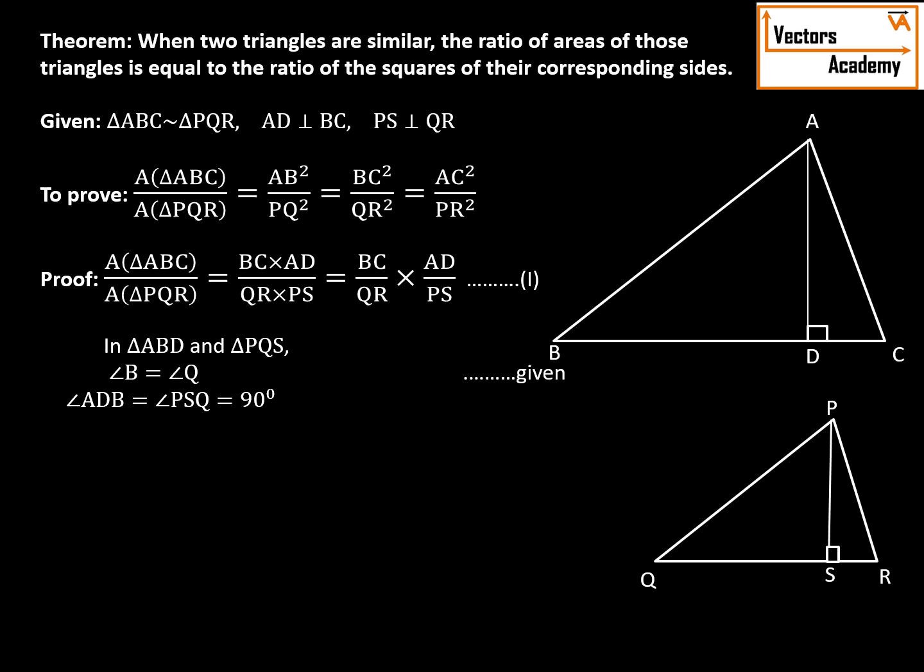So both these angles are equal and hence both the triangles, that is ABD and PQS, are similar to each other by AA test.